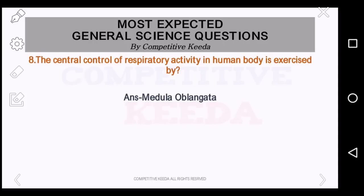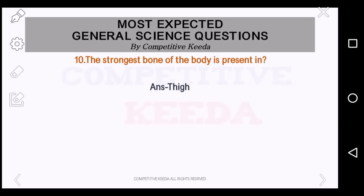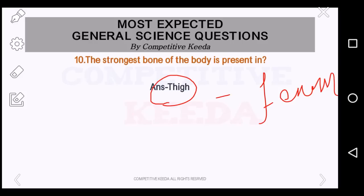The central control of respiratory activity in the human body is exercised by what? It is the medulla oblongata — that is the direct answer. Now, the red blood cells are produced by what? It is the bone marrow. The strongest bone of the body is present in which part? It is the thigh, and it is known as the femur. And where is the strongest muscle present? It is the jaw muscle.